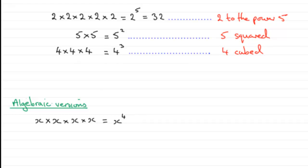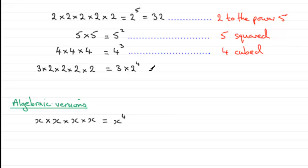Going back to numerical versions, suppose I had three times two times two times two times two times two. Well, it is three multiplied by two that is repeatedly multiplied by itself four times over. So we could write it as three multiplied by two to the power four, or with brackets: three bracket two to the power four. Two to the power four is two times two is four, times two is eight, times two is sixteen; multiply by three and sixteen threes are forty-eight.